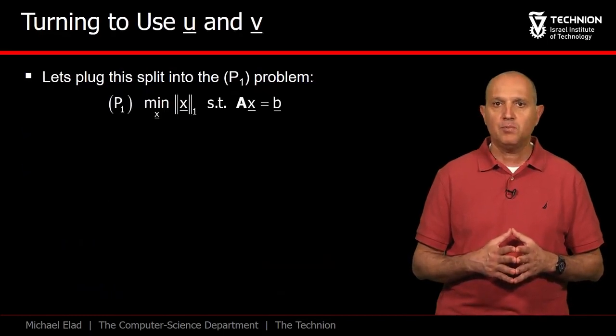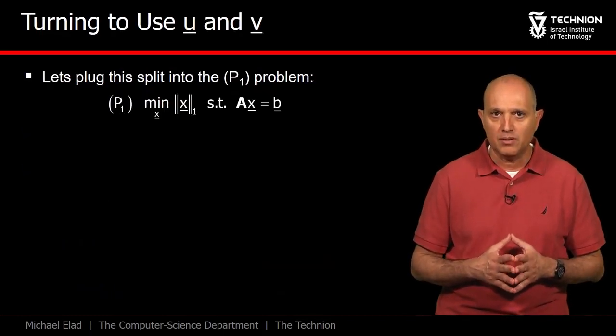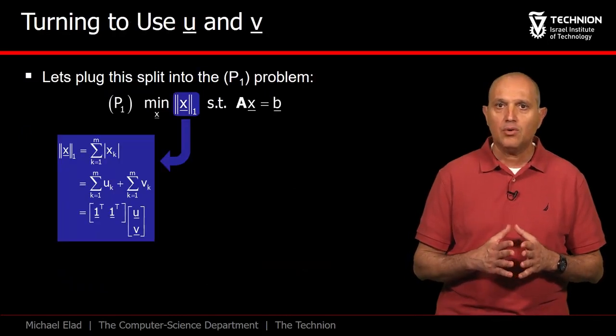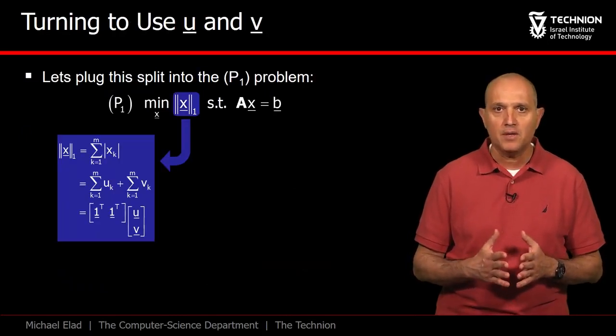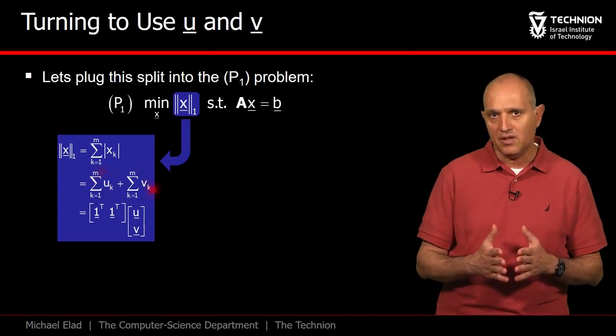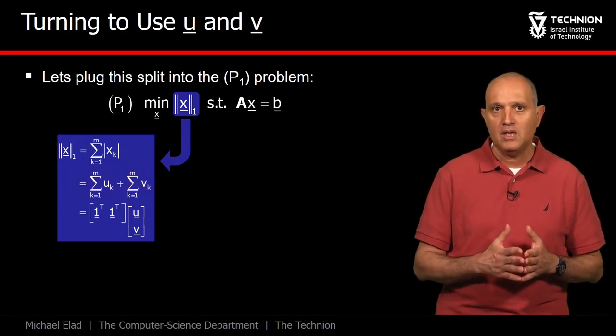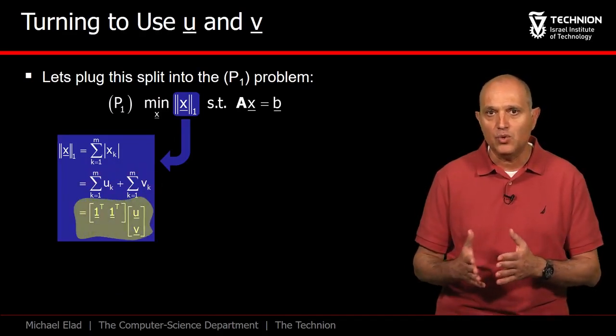Now, armed with this split, let's reformulate the P1 problem. First, the L1 norm is nothing but a direct sum of the entries in u and v, and thus it can be posed as a linear expression with respect to u and v.